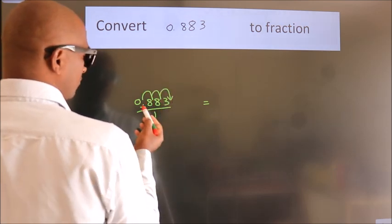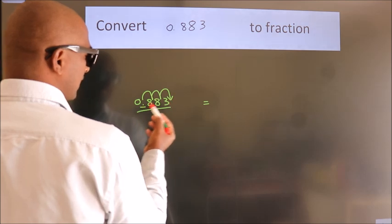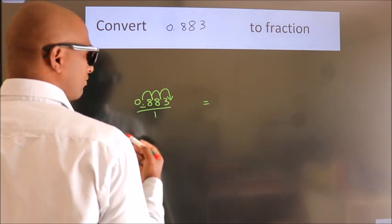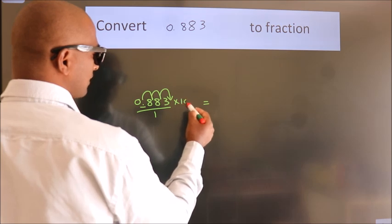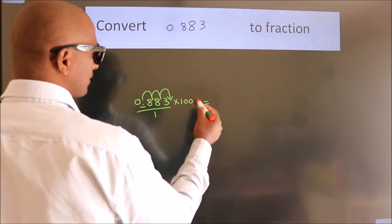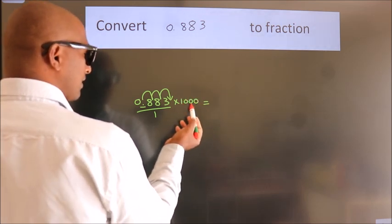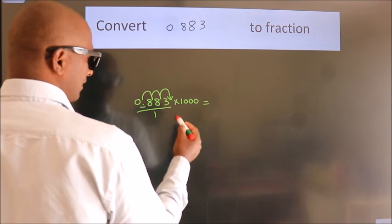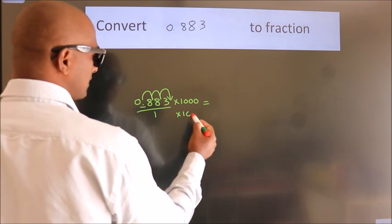To move this decimal after 3 numbers, we have to multiply it with 1000. Whatever number you are multiplying in the numerator, in the denominator also do the same.